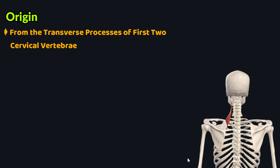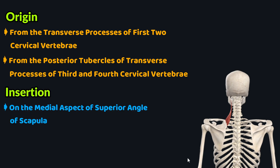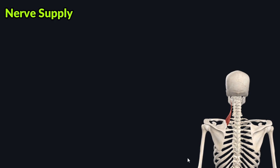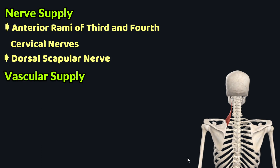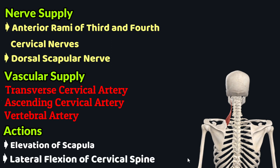To review: the levator scapulae originates from the transverse processes of the first two and the posterior tubercles of the transverse processes of the third and fourth cervical vertebrae, and inserts on the medial aspect of the superior angle of the scapula and the medial border superior to the spine of the scapula. Nerve supply is from the anterior rami of the third and fourth cervical nerves and the dorsal scapular nerve. Vascular supply comes from three arteries: the transverse cervical artery, the ascending cervical artery, and the vertebral artery. The actions are elevation of the scapula and lateral flexion of the cervical spine.